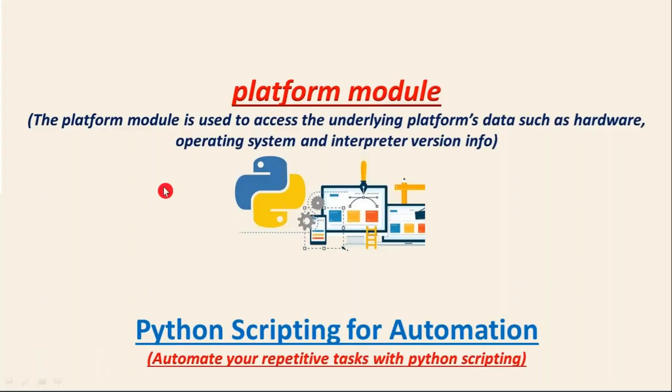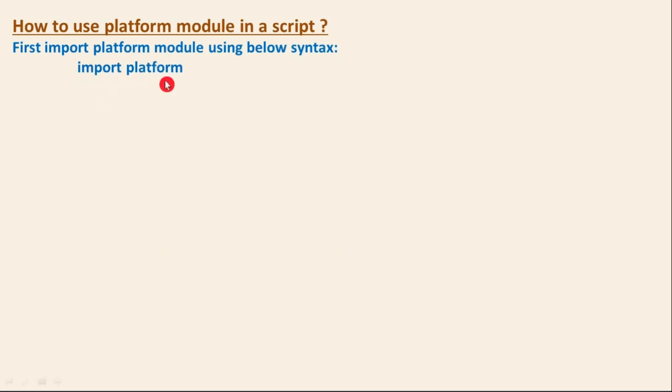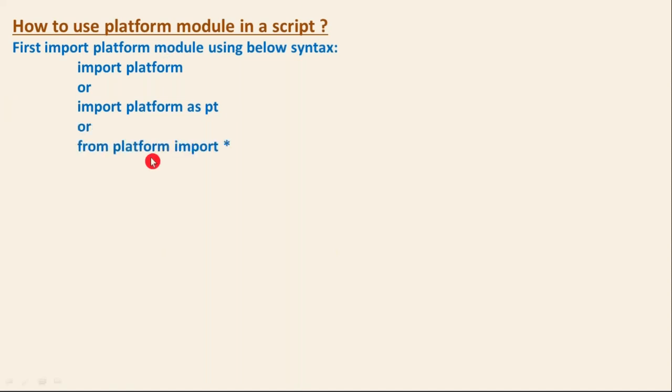We've already seen that if you want to use any module in your current script, you simply import it. In our case, for the platform module, one way is: 'import platform'. Another way is: 'import platform as pt', which means you are aliasing or renaming the module. Instead of using the name 'platform', you use 'pt'.